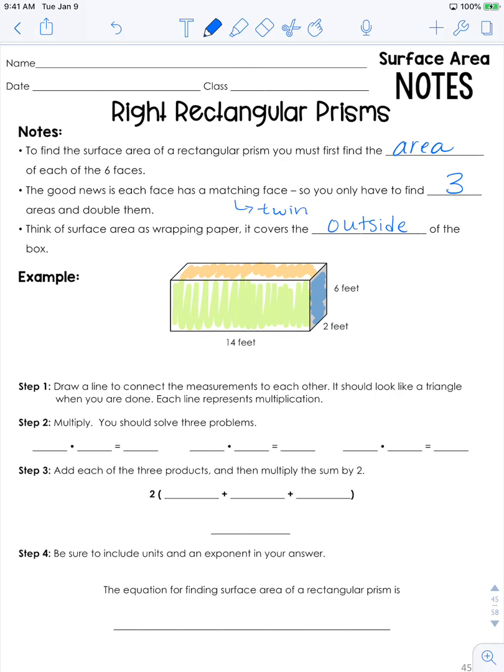I want you to draw a line to connect the measurements to each other, and it'll look like a triangle when you're done. We're going to connect 14 to 2, 2 to 6, and then we're going to go across here and do 14 by 6. You're going to solve each problem. Each line represents multiplication. This line tells me 14 times 2, this line is multiplying 2 and 6, and this line multiplies 14 and 6. The reason I recommend drawing the triangle is just so you don't get confused as to which numbers you've used and which ones you haven't used.